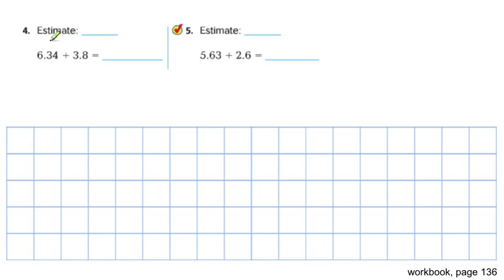All right, these problems are going to be solved with the same method that we did before. We're going to estimate first 6.34. That's pretty close to 6. 3.8 is close to 4. And so 6 plus 4 equals 10. That's our estimate. And now adding them to find out. I'm going to find the 1's place. There's the 1's place there.